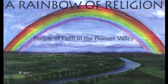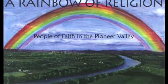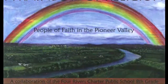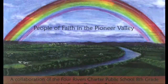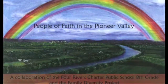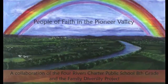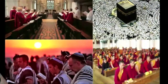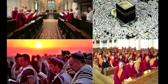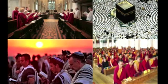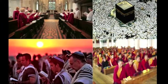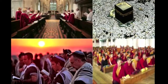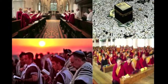A Rainbow of Religion is a book produced by the 8th grade class of Four Rivers Charter Public School in Greenfield, Massachusetts. The book is a compilation of monologues from diverse religious leaders in the Greenfield community, with whom the students conducted interviews with the purpose of learning more about the beliefs and practices of different religions.